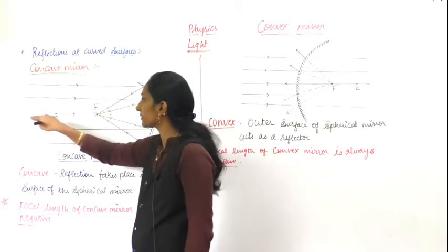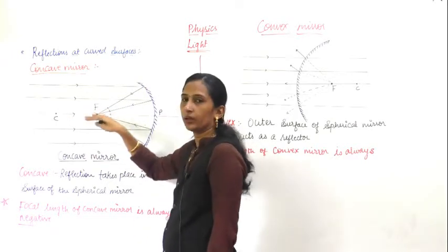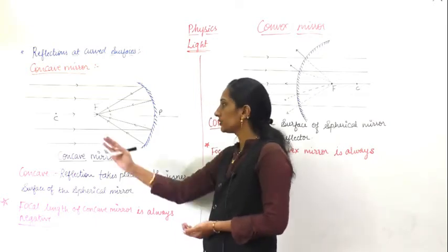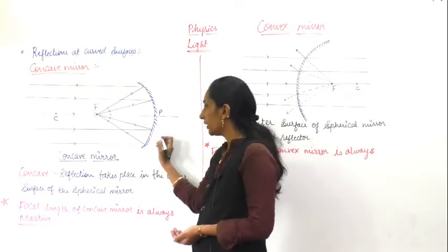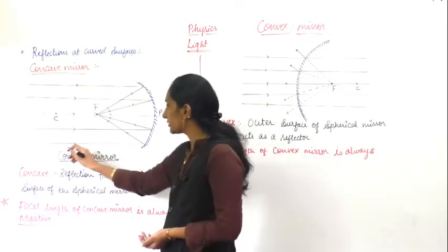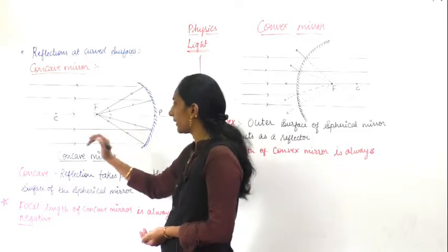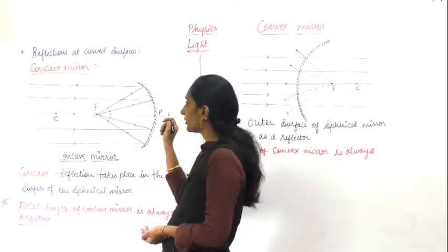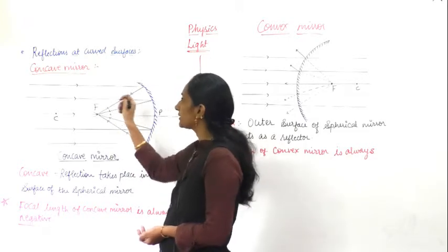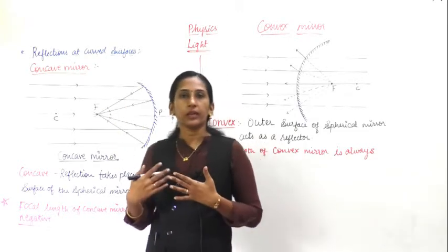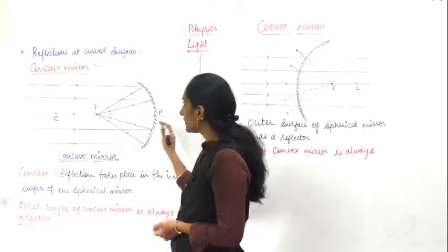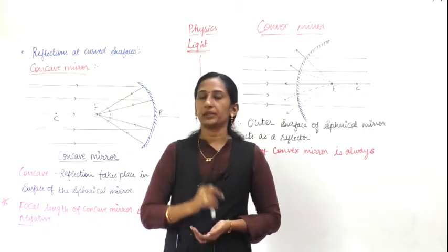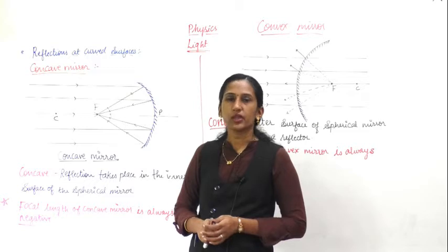So we will study what happens when light falls on a curved surface. These are parallel beams of light rays falling on the concave mirror. Each ray strikes the mirror and reflects back. When all these rays reflect back, they come and meet at one point, which is called the focus.